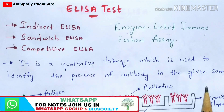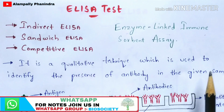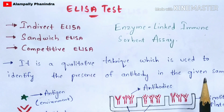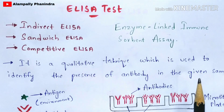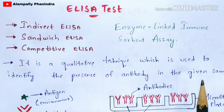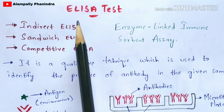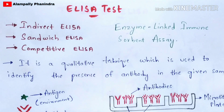What type of sample are you going to take for this ELISA test? You are going to take serum — that is, white blood cells — which consists of the antibodies. So here you are going to test whether the antibodies are present in that serum or not.